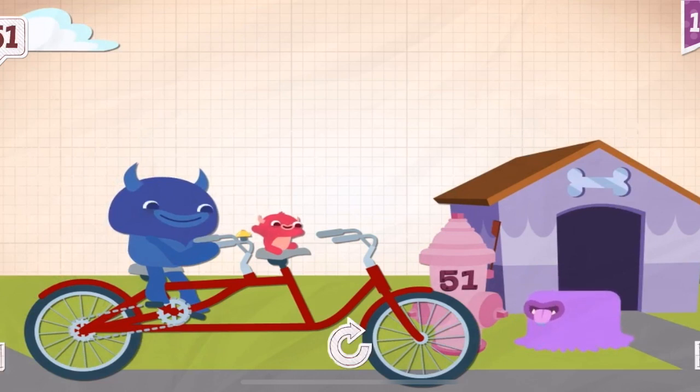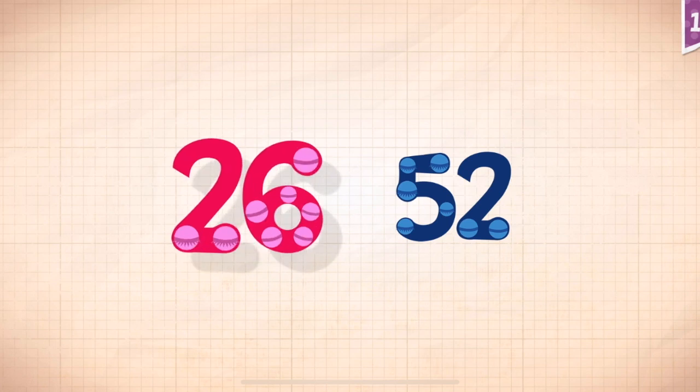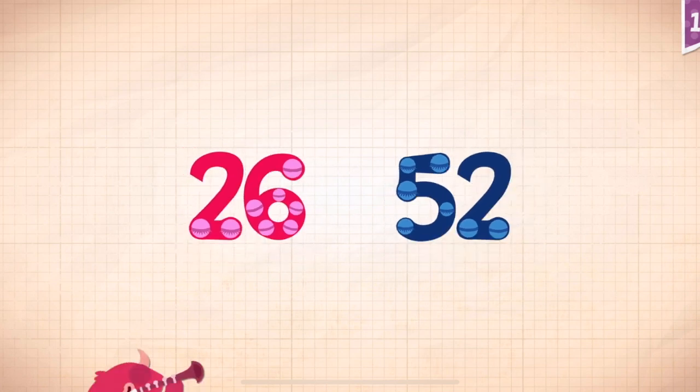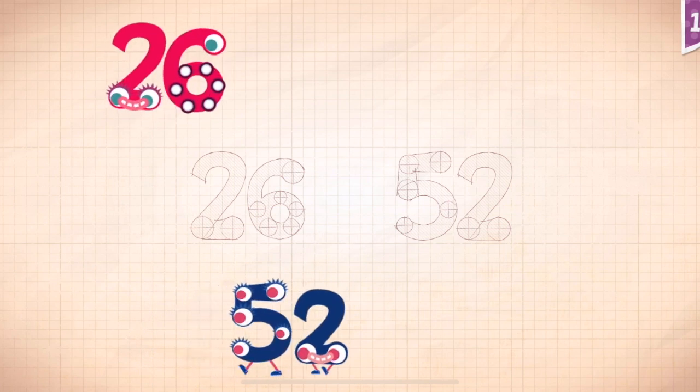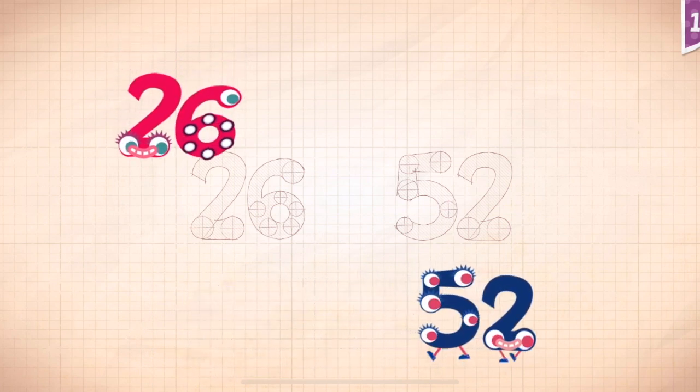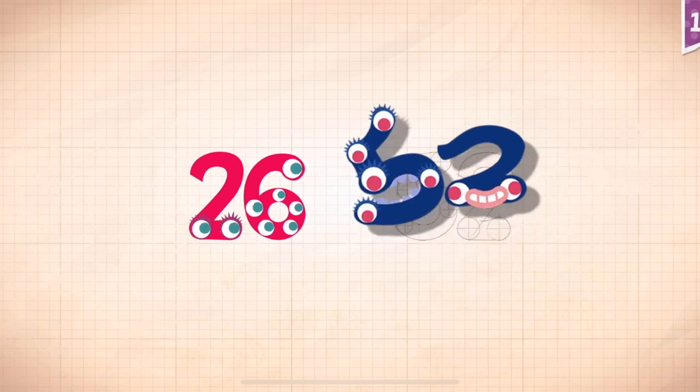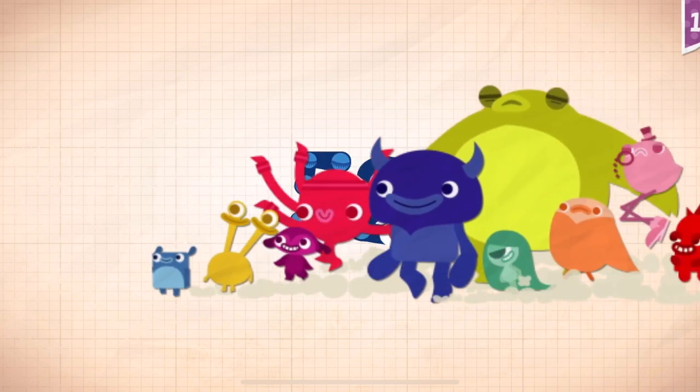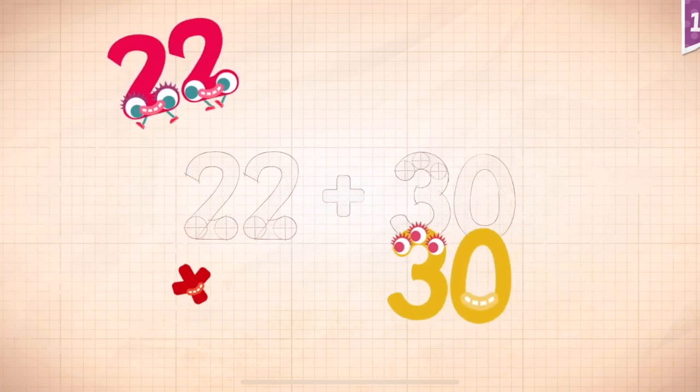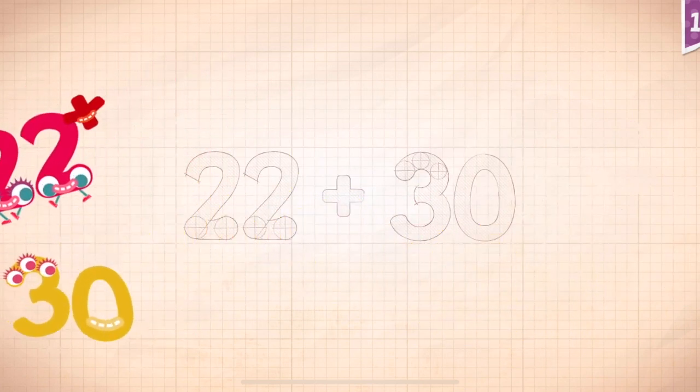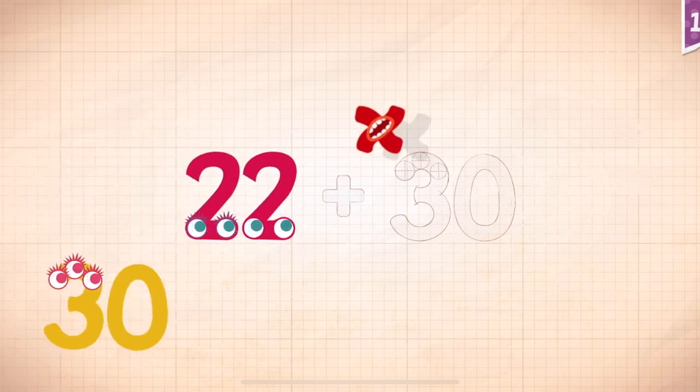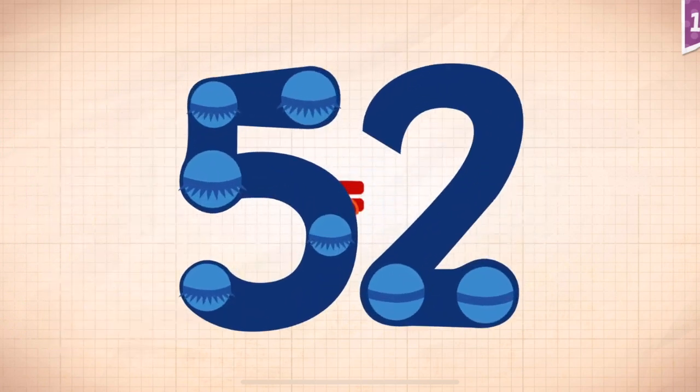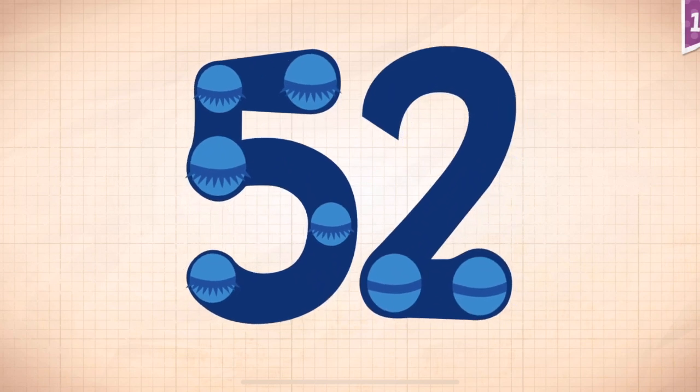Eli lives at 51 Main Street. Count by 26s: 26, 52. Count again: 26, 52. Now 22 plus 30 equals 52.